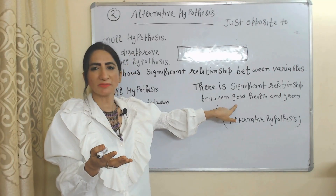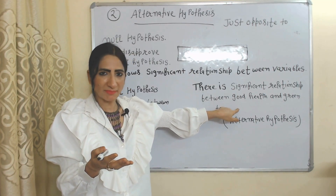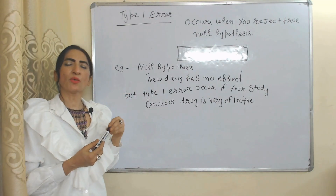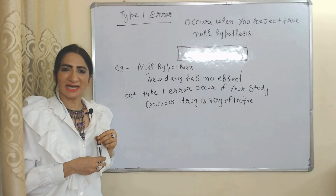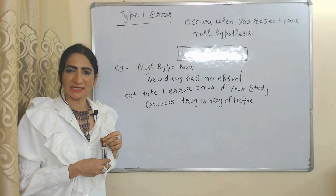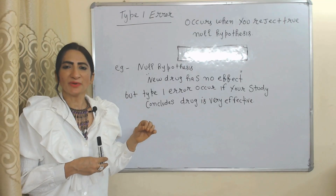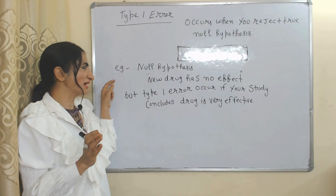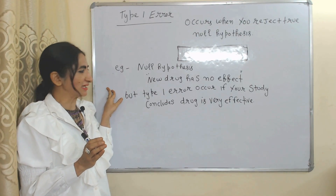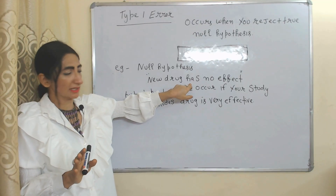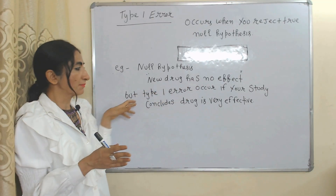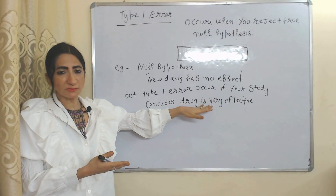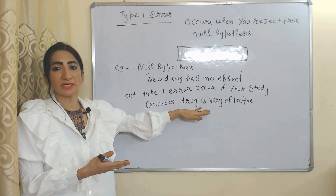This will be called the alternative hypothesis because it shows a significant relationship between variables. What is type 1 error? Type 1 error occurs when you reject the true null hypothesis. For example, your null hypothesis is 'new drug has no effect' and this is absolutely true, but your study concludes the drug is very effective. This will be called type 1 error because you are rejecting a null hypothesis which is absolutely true.